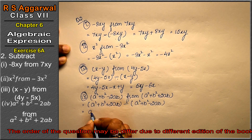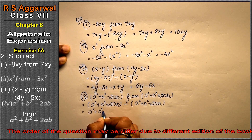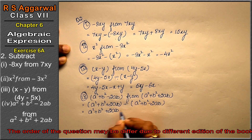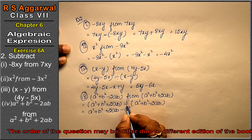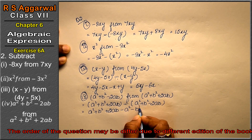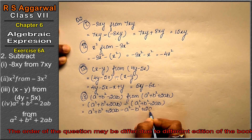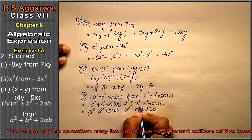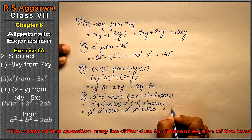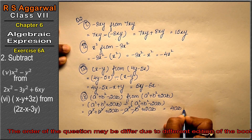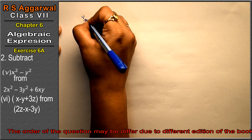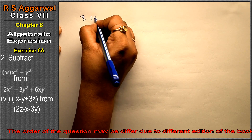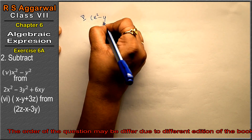Opening the brackets: a² + b² + 2ab, minus plus minus gives: a² cancels, b² cancels, and we get 4ab. So 4ab is the answer.